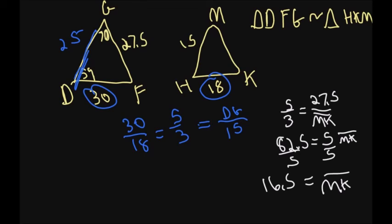And while we're working, let's go ahead and find the angles. So D corresponds to H, so that has to be 59 degrees. G corresponds to M, so that has to be 70 degrees.